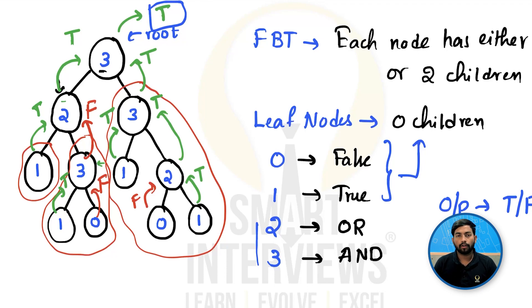If we observe, what are we doing? We are starting with the root and first we are trying to evaluate the left subtree. Then we are trying to evaluate the right subtree and then we are combining them with whatever the operation is given at the root. So this is the approach. Now let's go ahead and write the code for this.